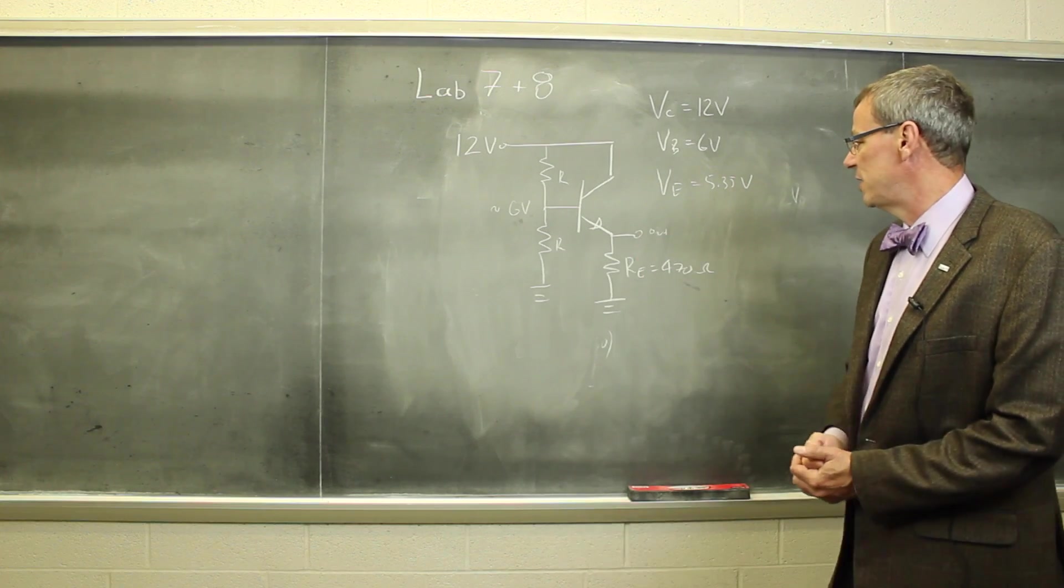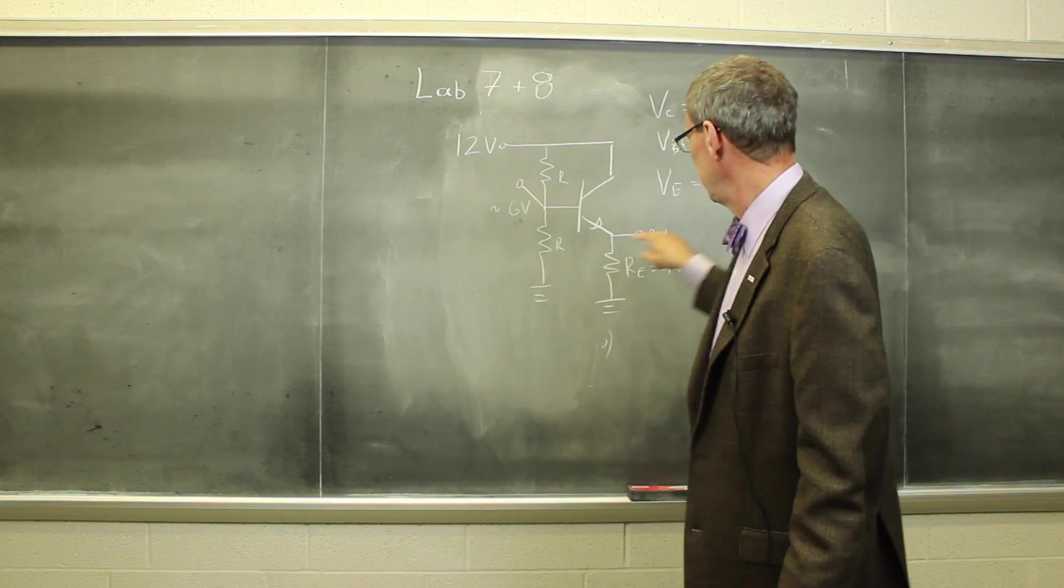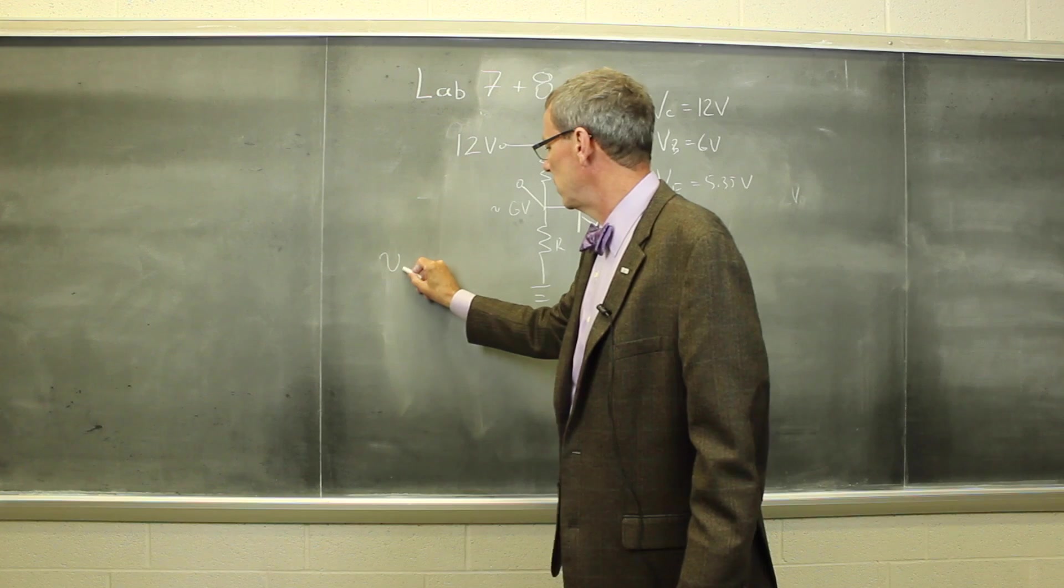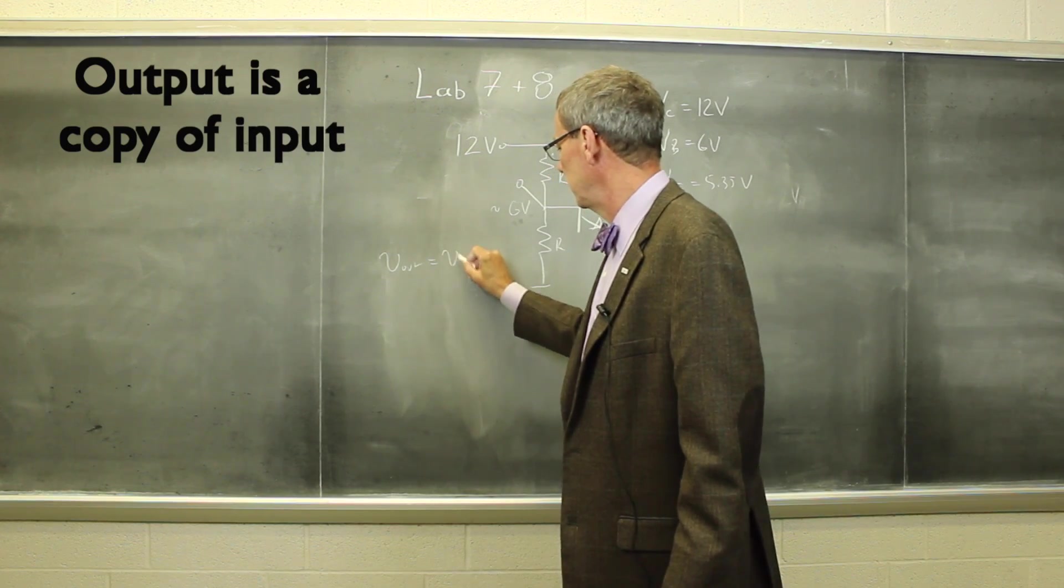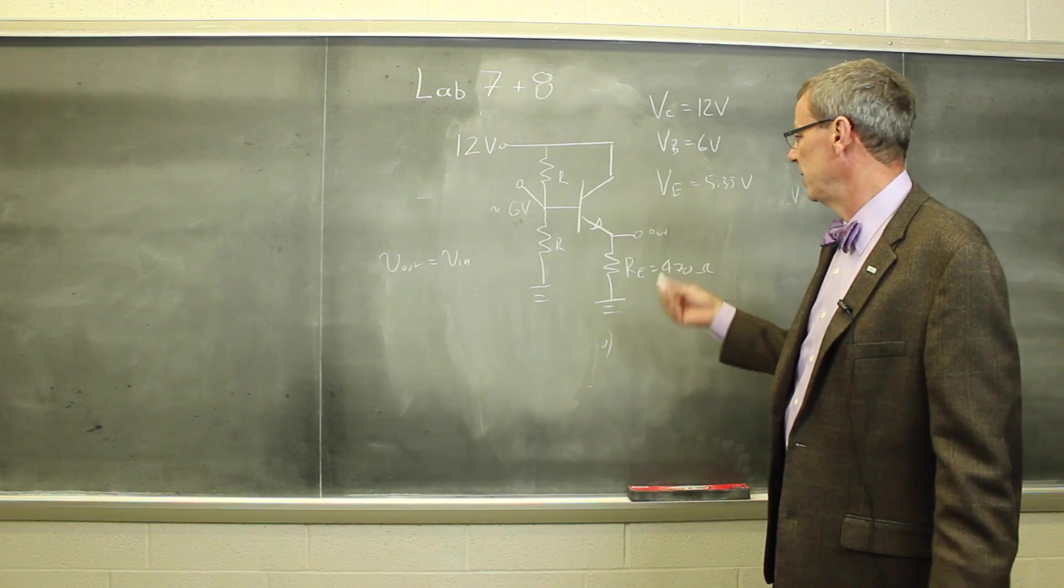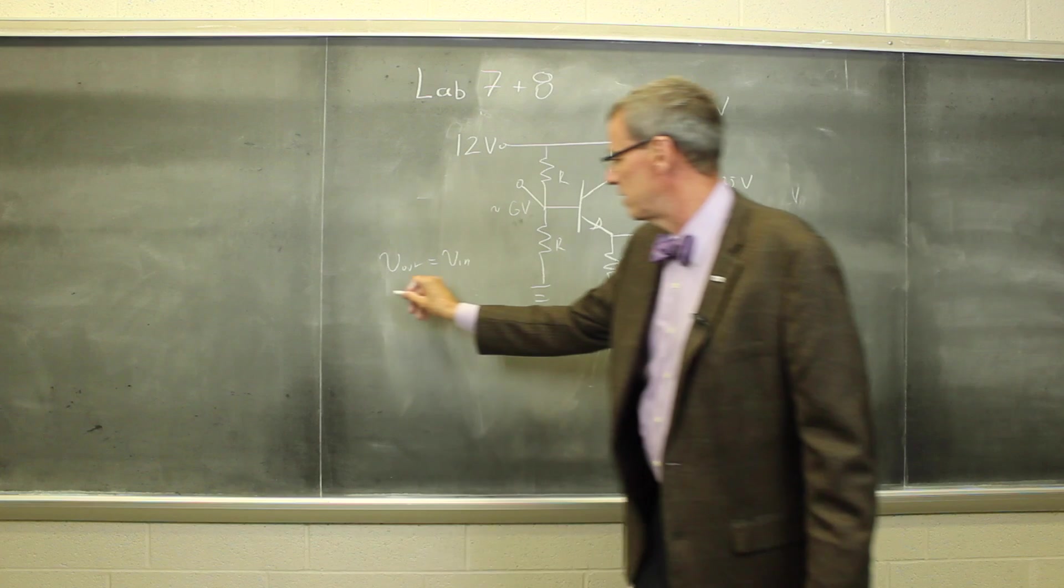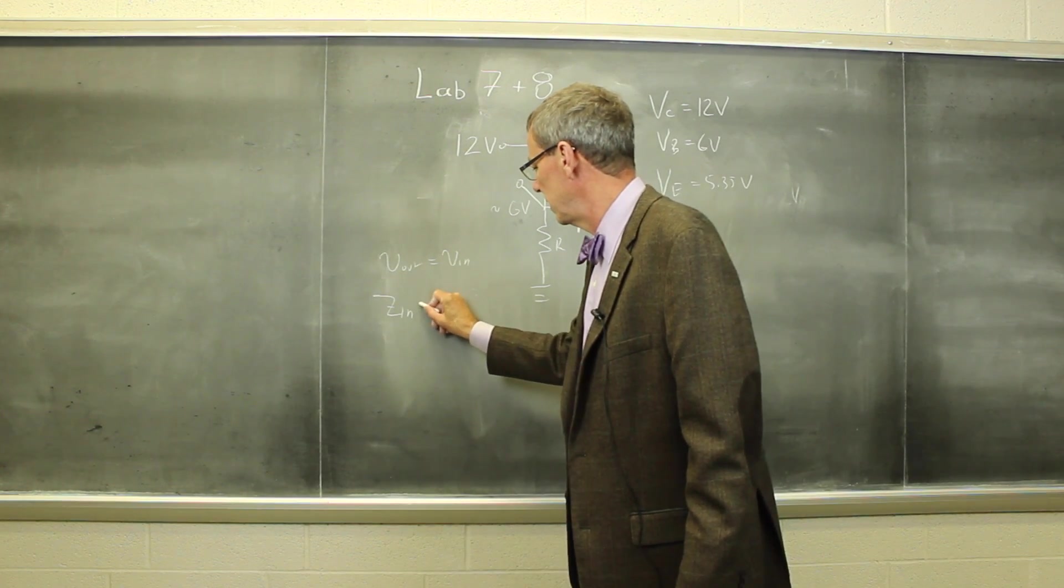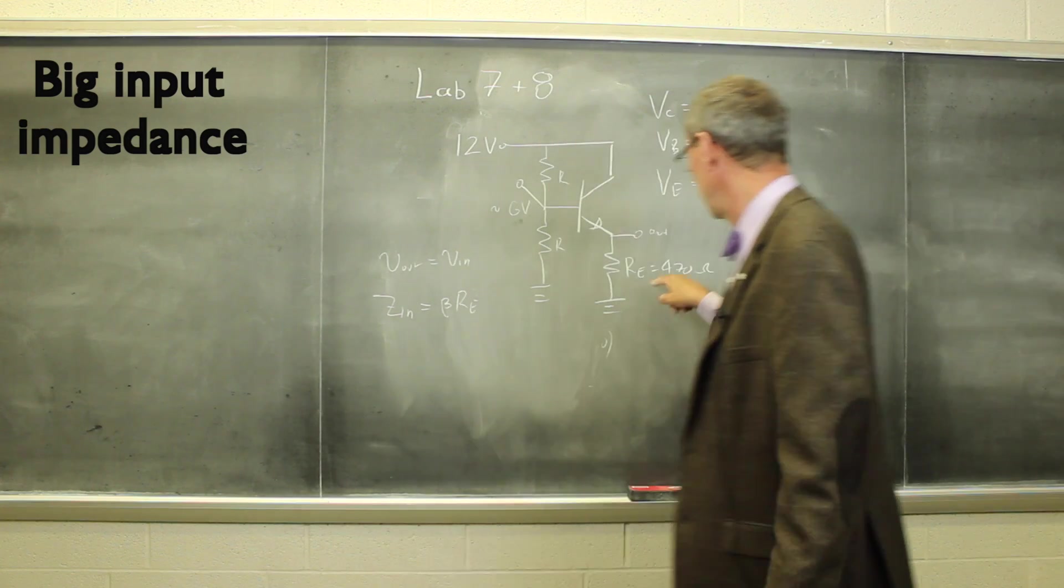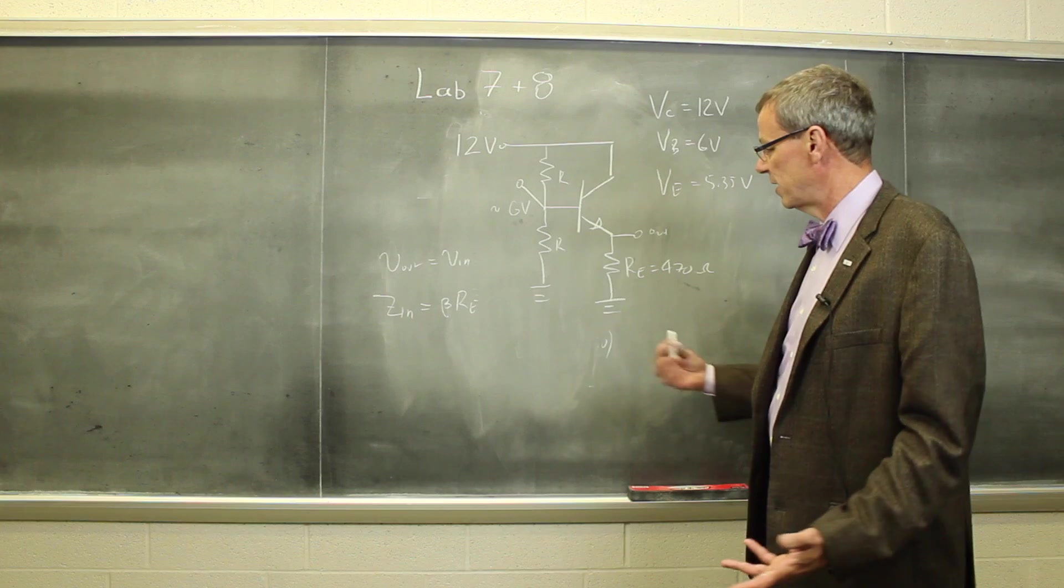Once we have this set up, this is known as an emitter follower circuit. We can connect an AC signal into here, and look at the AC signal going out there. We'll see that the output is simply a copy of the input. But the circuit has a very useful behavior. This large impedance of this transistor makes the circuit look like it has a very large input impedance, which is beta times Re. So 100 times 470, that's 47 kiloohms, that's good.